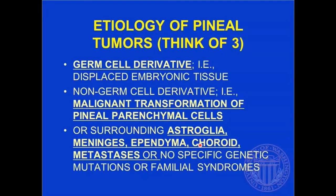Think about where the pineal region is. It's near the tentorium, it's near arteries and veins, it's near the choroid plexus. So you can have any other tumor there — a choroid plexus papilloma, an ependymoma, a meningioma, metastases. These are all known to occur there.